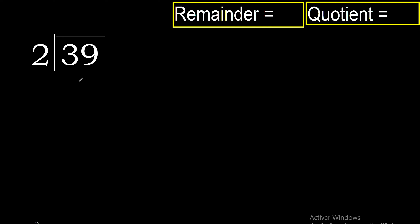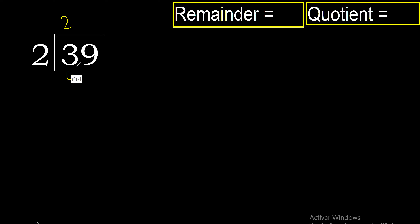39 divided by 2. 3 is not less than 2, therefore with 3, 2 multiplied by 2 is 4. Excessive — 2 multiplied by 1 is 2. 3 minus 2 is 1, bring down the 9.